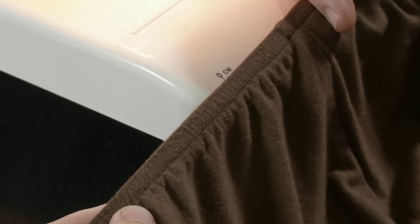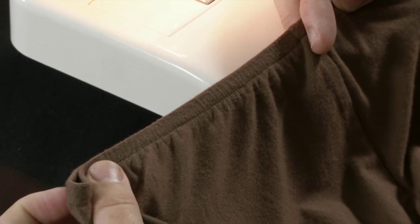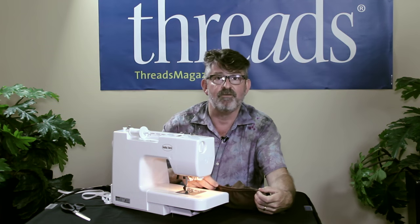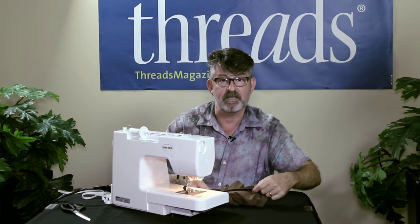It lays flatter against your body, there's no seam allowance to get in the way, and it gives you a much more bulk-free wearing. It's very easy to do and it looks very clean. You have a row of stitching on the inside with the elastic and one piece of stitching on the outside. So let's get started.